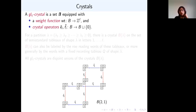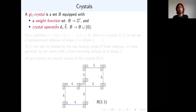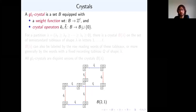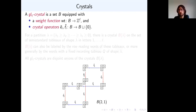What is a crystal? The data specifying a crystal is a set B together with a weight function taking values in Z^L, and crystal operators E_i and F_i, which are usually drawn as a colored directed graph. The E's always go the opposite direction of the F's, so they carry the same data. The zero is a dummy element to indicate there's no edge leaving a given vertex. These graphs always have at most one outgoing edge.